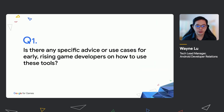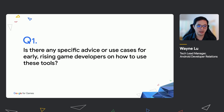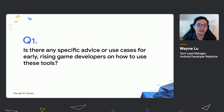For question number one, is there any specific advice or use cases for early-stage game developers on how to use these tools? For game developers with a small team size, we are working with popular game engines for you to integrate your libraries. You can find out more on our website at developers.android.com/games. This will allow you to focus on building gameplay instead of the entire technology stack.